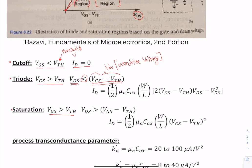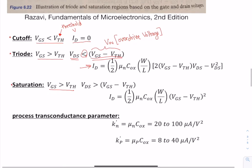If we're in the triode region, we're going to use this current equation, which you can see is dependent on VDS.